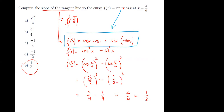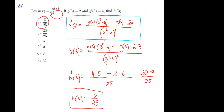This question tests the quotient rule: g(x) divided by (x squared minus four). Use the quotient rule — the blue box shows the concept, and the rest is substitution and arithmetic. Quotient rule is important.